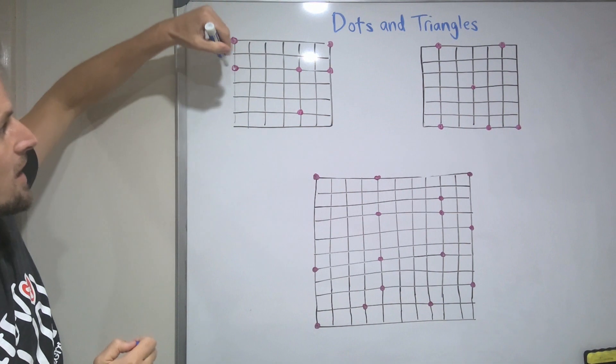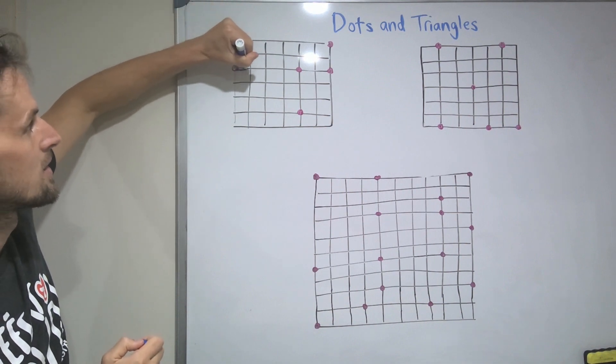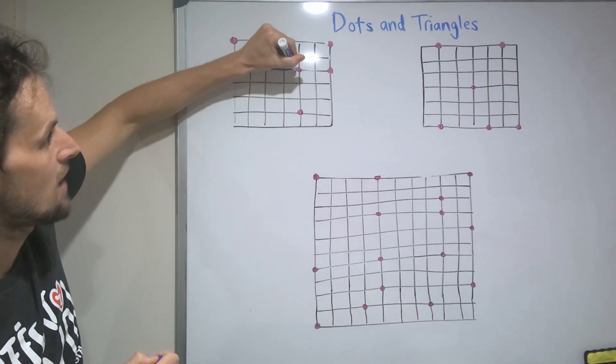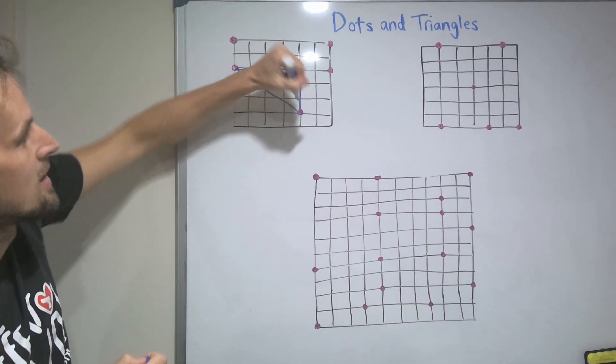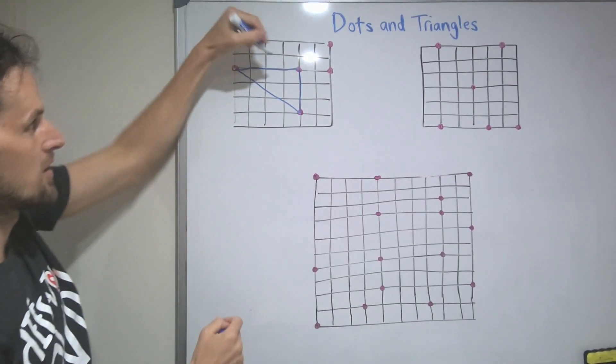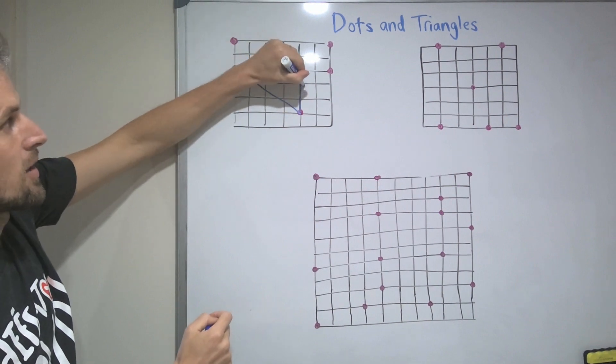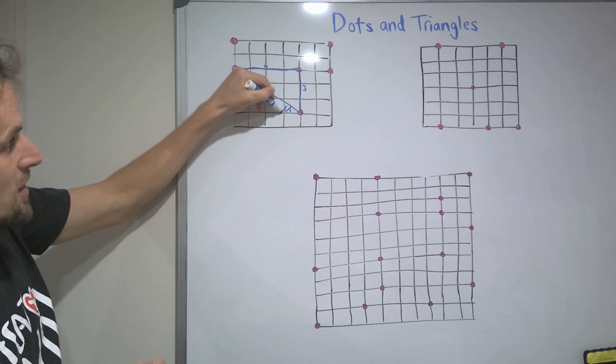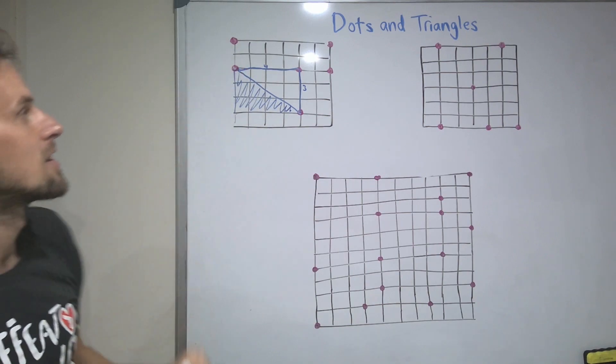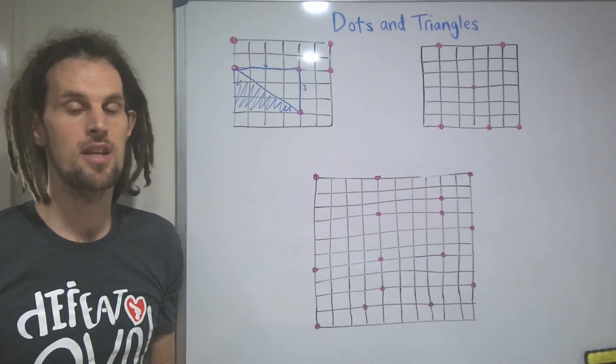So maybe we'll start down here by joining these. And this has a base of four or three, depending on which way you look at it, and a height of four or three. So here's the four, here's the three. Four by three is twelve. But because it's not a rectangle, this bit's not included. So this has got an area of six square units. So we're all good there.